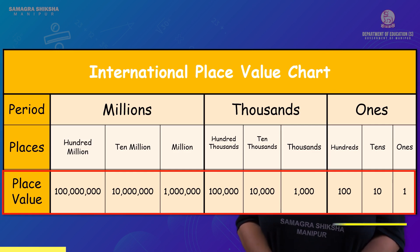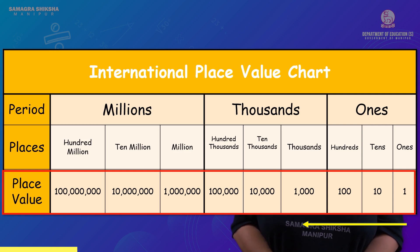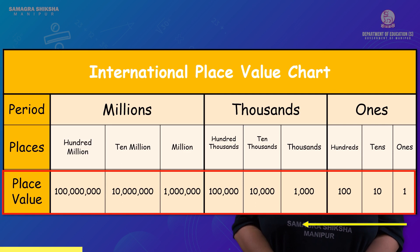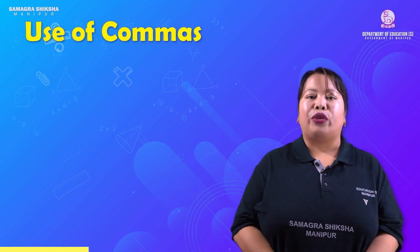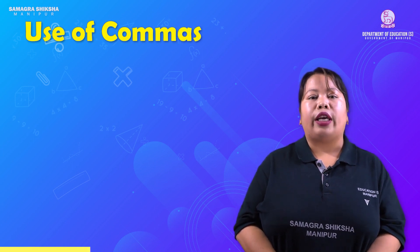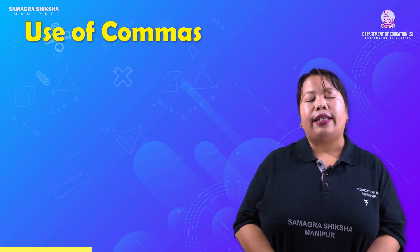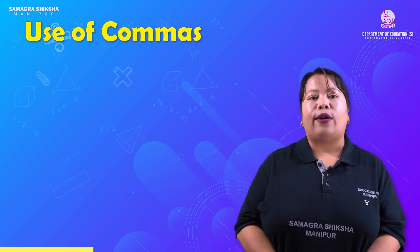Now, the place value chart. The use of comma in the place value system: in the Indian place value chart and in the international place value chart, the comma separates the periods. For example, the number 7,65,43,21 uses commas placed at specific intervals.